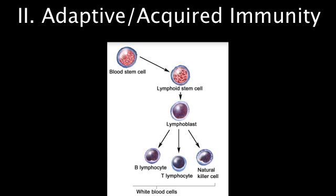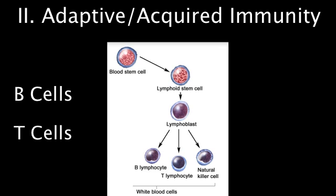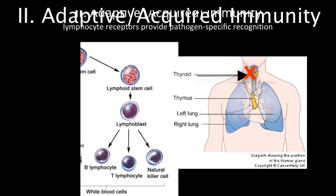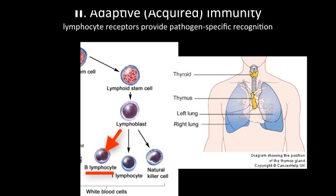Vertebrate animals, including humans, are unique in having adaptive immunity in addition to innate immunity. The adaptive response relies on B and T cells, which are types of white blood cells collectively called lymphocytes. Like all blood cells, lymphocytes are made in the red marrow of bone. Some lymphocytes migrate to the thymus gland — an organ in the thoracic cavity just above the heart, not to be confused with the thyroid gland located in the neck — and mature into T cells. Other lymphocytes that remain in the bone marrow develop into B cells. Still other lymphocytes remain in the blood and become natural killer cells.